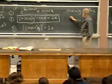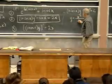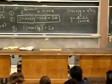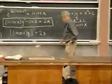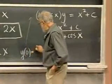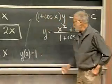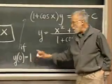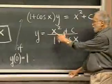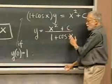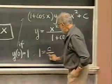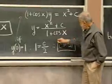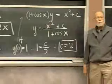Now integrate: (1 + cos x)·y equals x squared plus a constant. Therefore y equals (x squared + c) divided by (1 + cos x). If I had been given the initial condition y(0) = 1, then substituting x = 0: the left side gives 1, the right side gives c over (1 + cos 0) = c/2. So 1 = c/2, meaning c = 2. The solution with that initial condition would be (x squared + 2) / (1 + cos x).